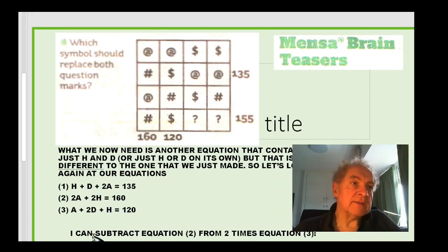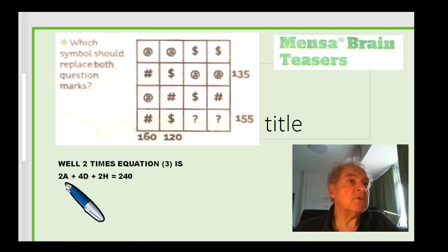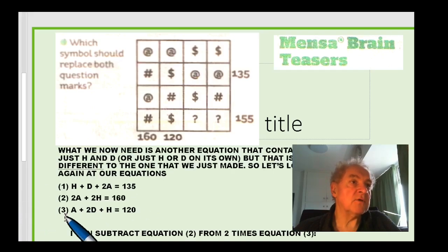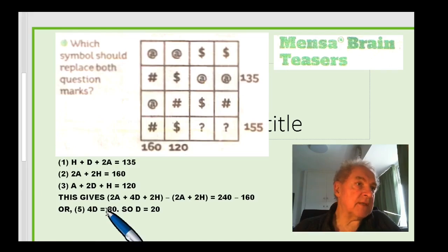So we go back to our three equations. Now, I can see that if I can subtract equation two from two times equation three, I multiply the left and the right hand side of equation three by two. Then two times equation three is 2a plus 4d plus 2h equals 240. Taking away equation two from two times equation three, you've got 2a plus 4d plus 2h minus 2a plus 2h equals 240 minus 160.